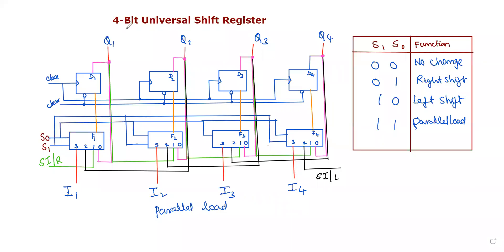Hello guys, in this video I will explain about a 4-bit universal shift register. A register is a storage device used to store binary data. A shift register means we can shift the data inside the register and out of the register using shifting operations.